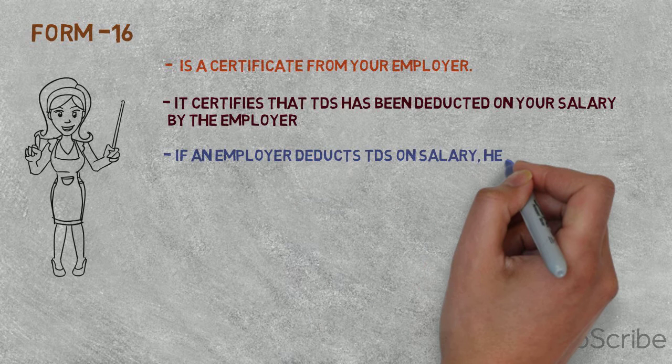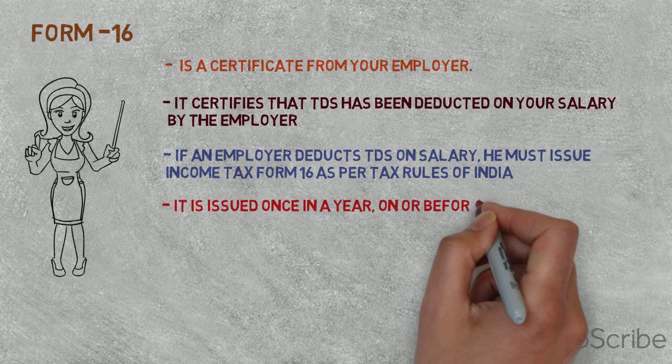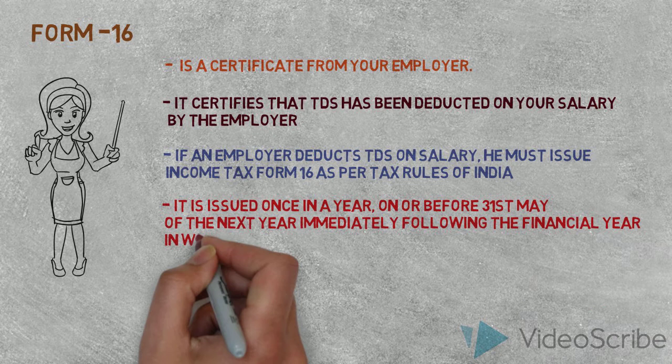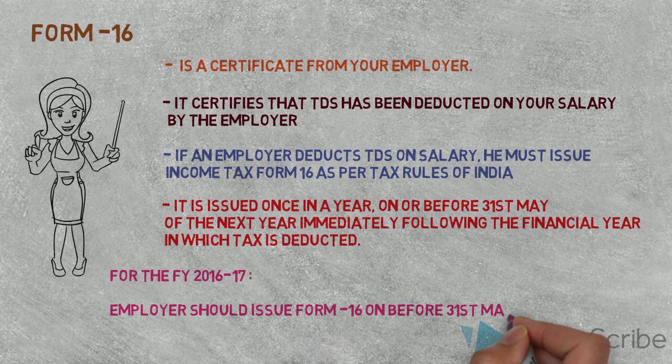This is issued once a year. If our financial year is 2016-17, then the employer has to issue this form by 31st May 2017. Form 16 has two parts: Part A and Part B.